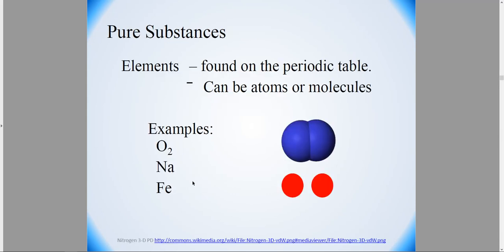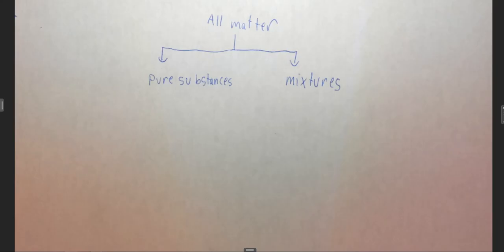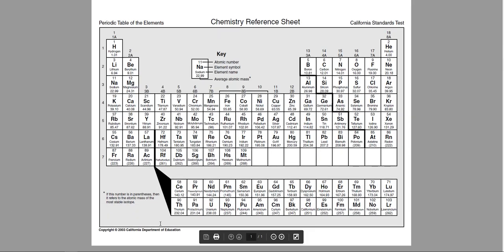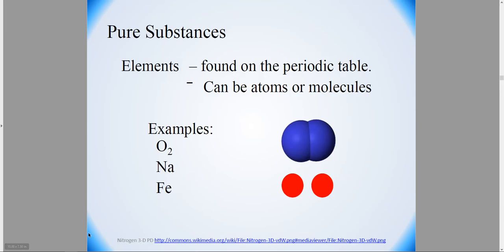First we're going to talk about some pure substances, which can be subdivided into elements, which are found on the periodic table. You'll recall possibly from a previous lecture that we looked at the periodic table. There's approximately 110 elements on this periodic table, and if an element is by itself, such as lithium by itself or oxygen by itself, which happens to be diatomic O2, these are elements. So that is one type of pure compound.